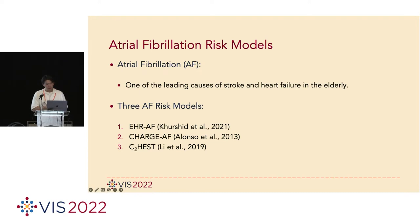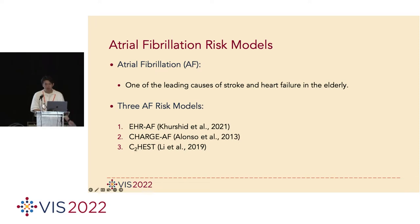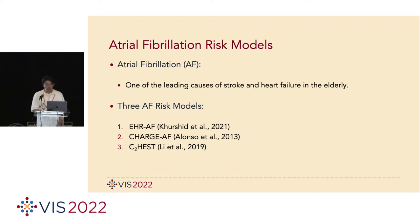I'm going to walk you through the design of RME Explorer with a case study on atrial fibrillation risk models. Atrial fibrillation, AF in short, is a common cardiovascular condition that is one of the leading causes of stroke and heart failure in the elderly population. In this case study, we selected three well-known AF risk models: EHR, CHARGE, and CHEST. Those are linear additive models that produce a risk score by computing a linear combination of various input variables representing pre-existing conditions and patient characteristics. We then convert that score into five-year AF risk rates. We use a large-scale observational study from the UK that includes 500K individuals enrolled over 2006 to 2010.